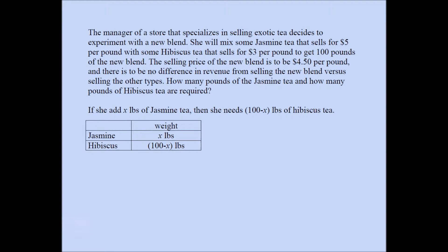In order to solve the problem, we'll first define our variables very carefully. We actually will need only one variable. We're going to use x to represent the pounds of jasmine tea the manager needs. So if she needs x pounds of jasmine tea, then she will need 100 minus x pounds of hibiscus tea. The 100 comes from the fact that her blend should contain 100 pounds of the two types of tea.